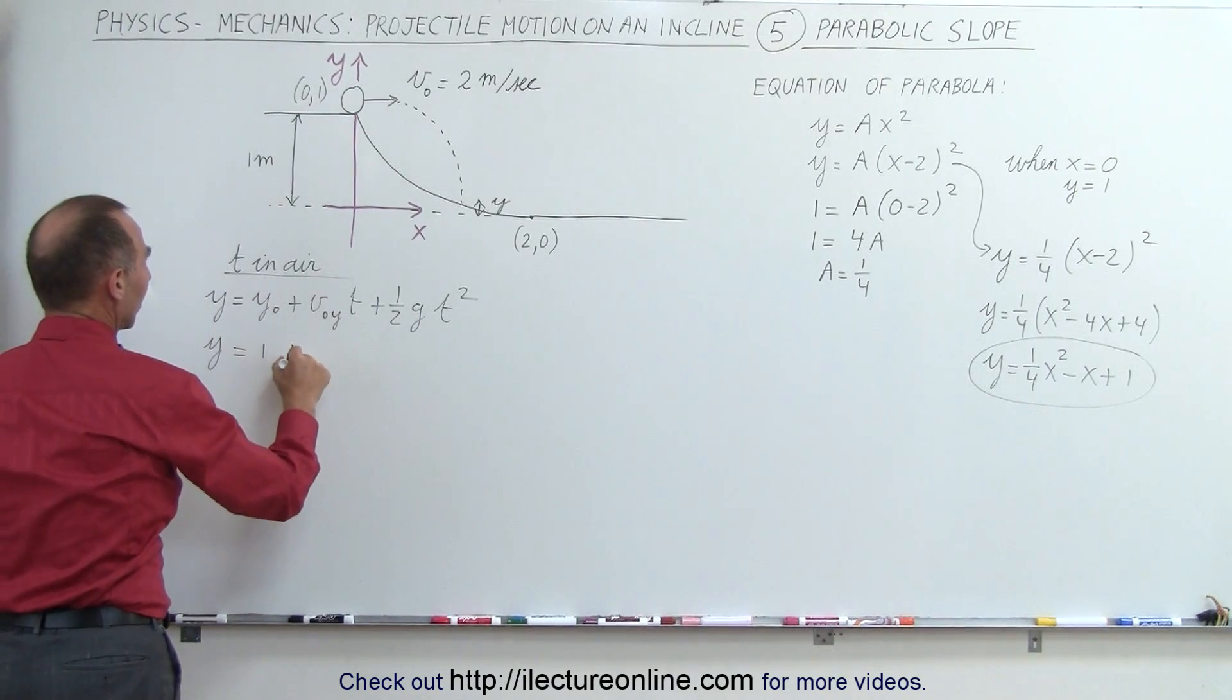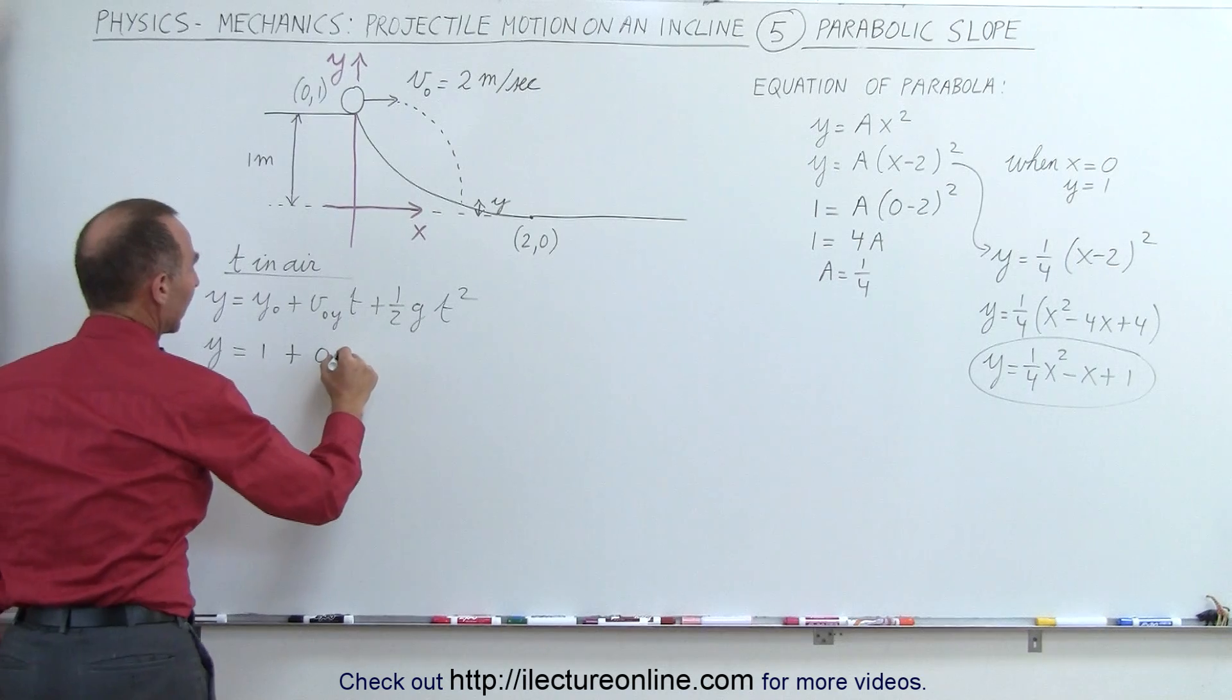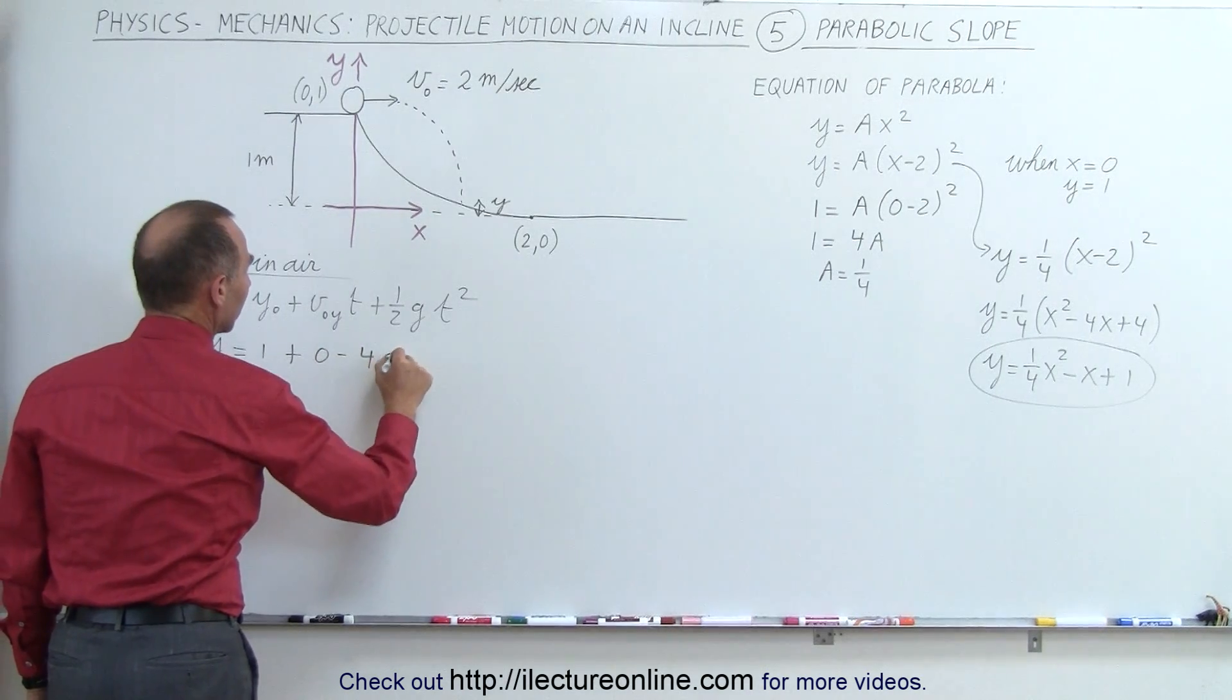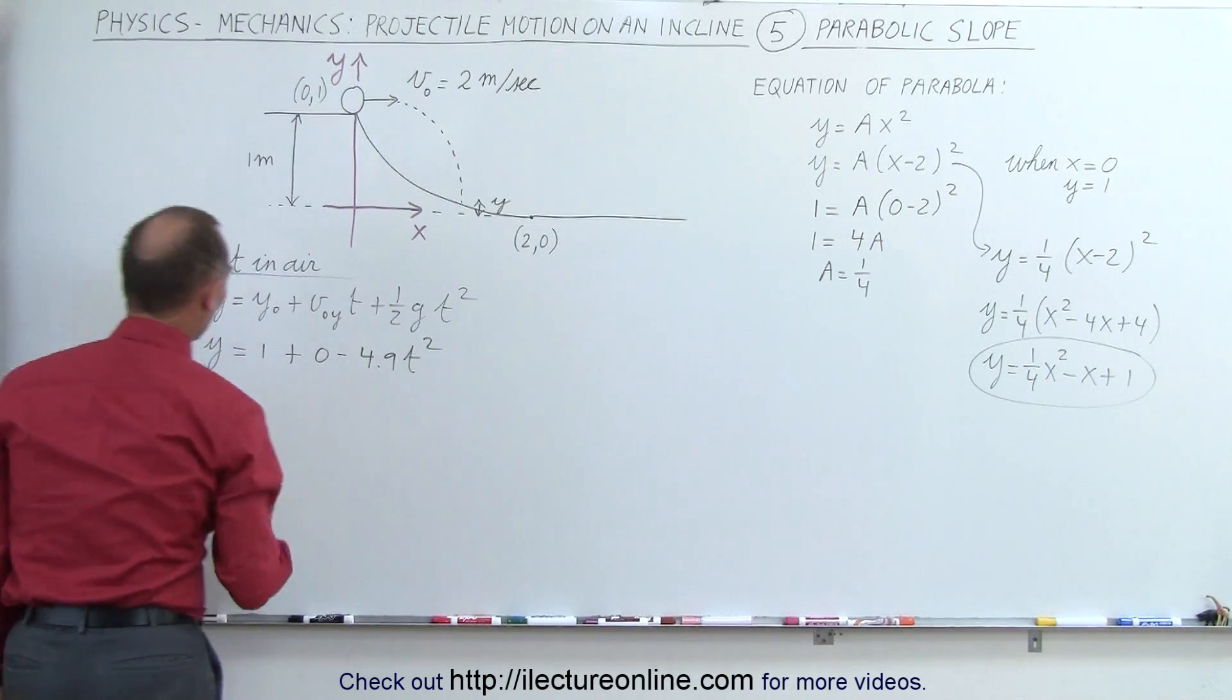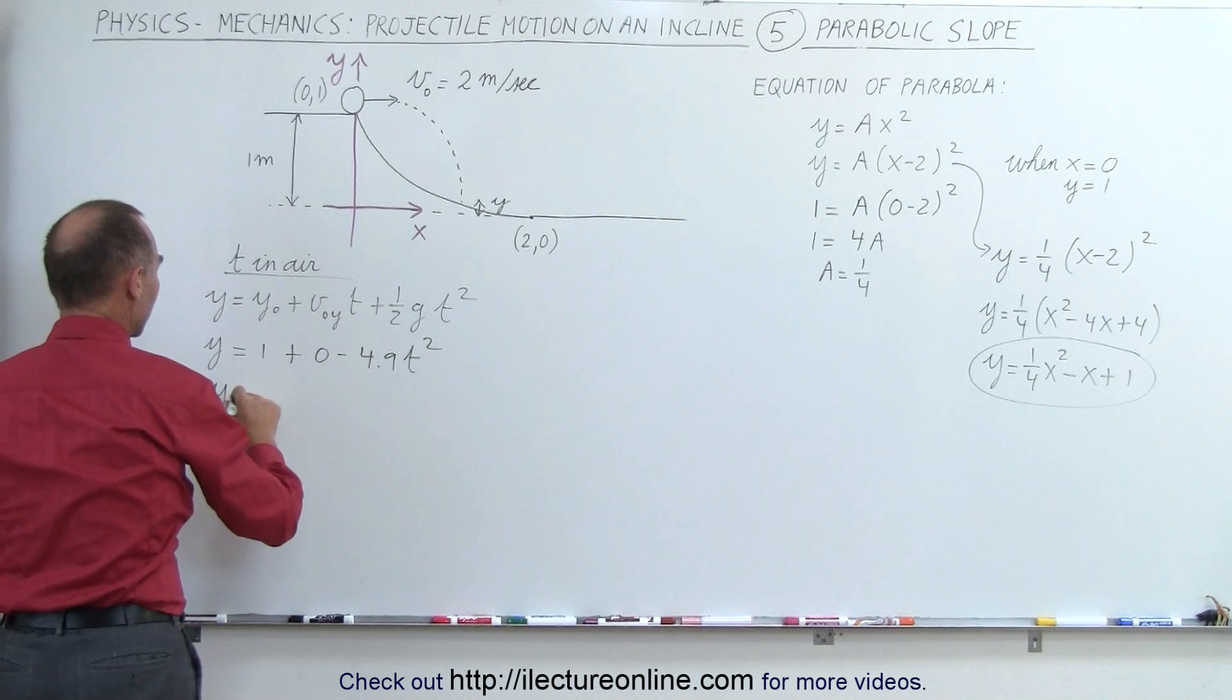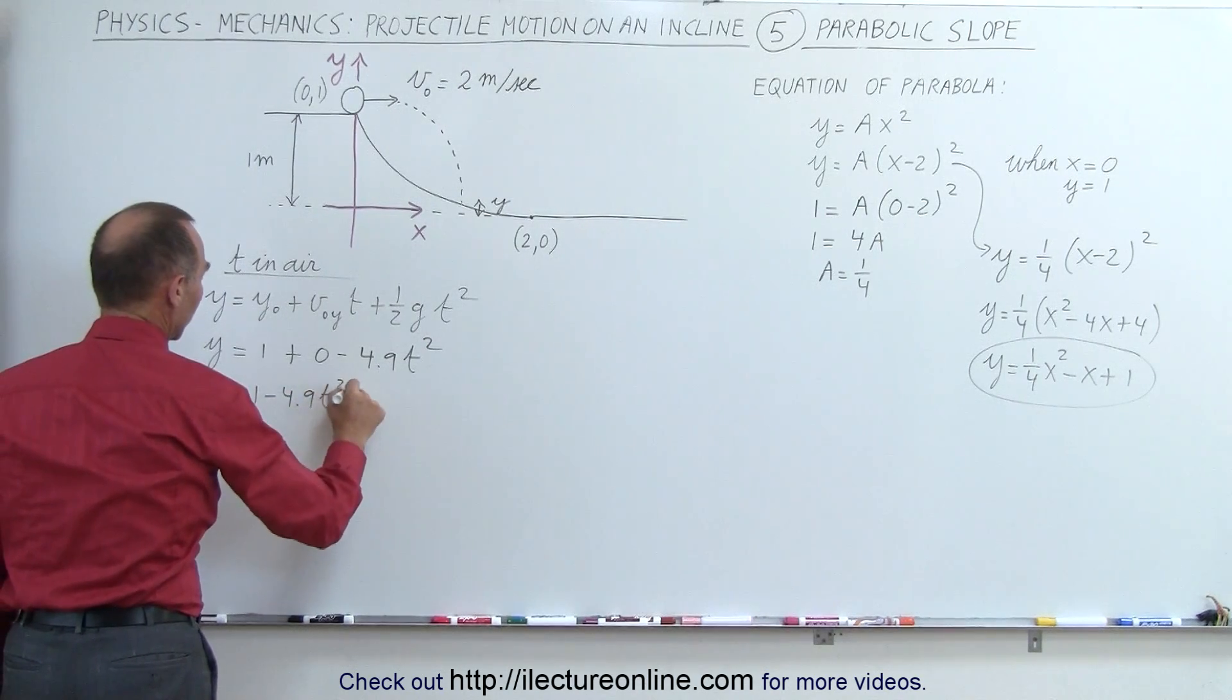That will be this distance right here. So the final height right here would be y. The initial height is equal to one. Initial velocity in the y direction is zero. And here we get minus 4.9 t squared. We're simplified. We have y equals 1 minus 4.9 t squared.